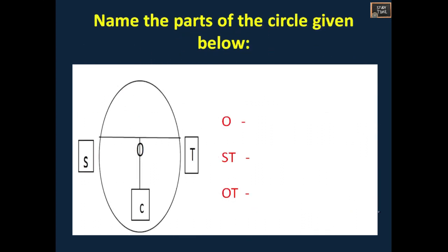Name the parts of the circle given below. Here the answer is: this O is center, ST is diameter, and OT is radius.